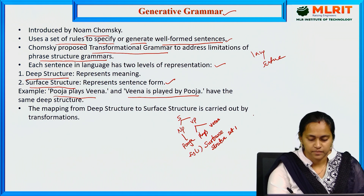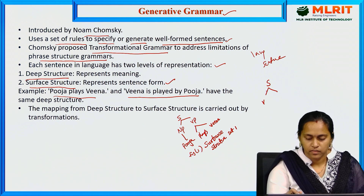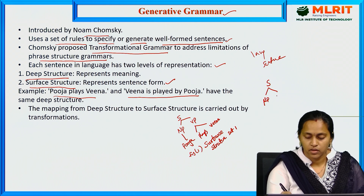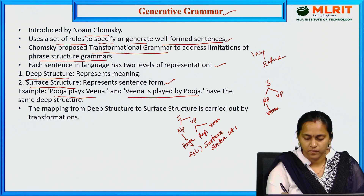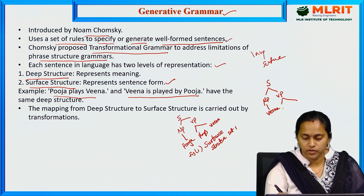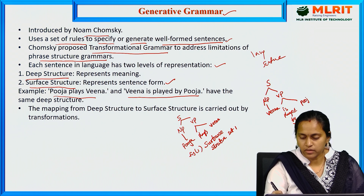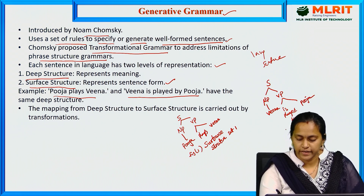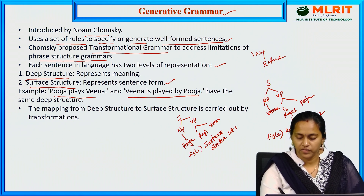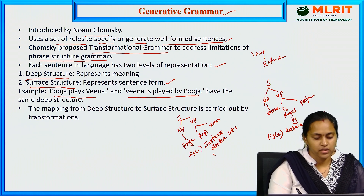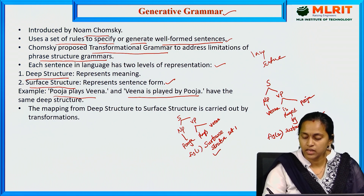In sentence two, 'Veena is played by Pooja,' the noun phrase contains 'Veena,' and the verb phrase contains 'played by Pooja.' This is the surface structure for sentence two.